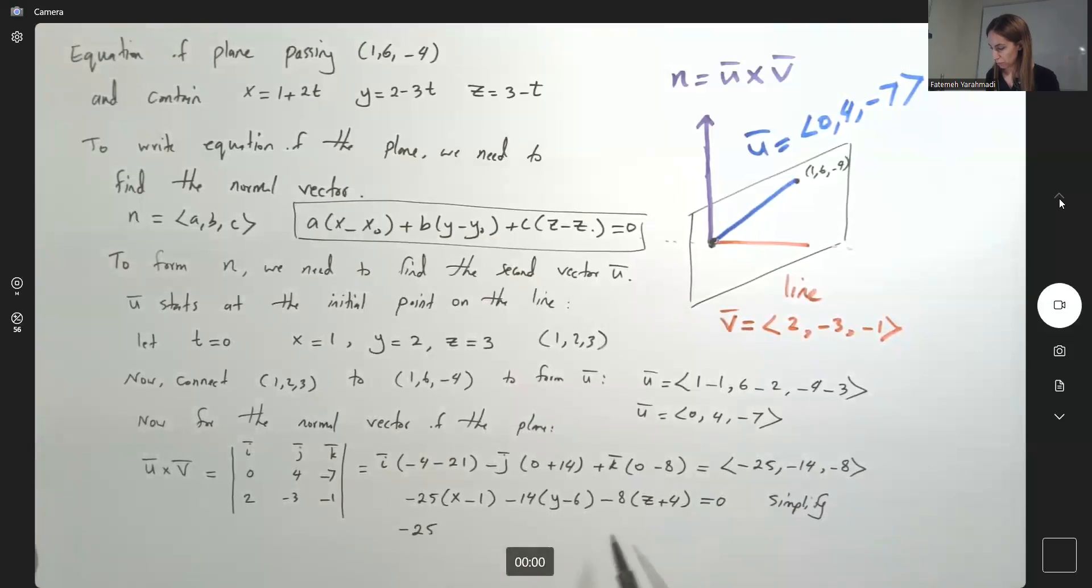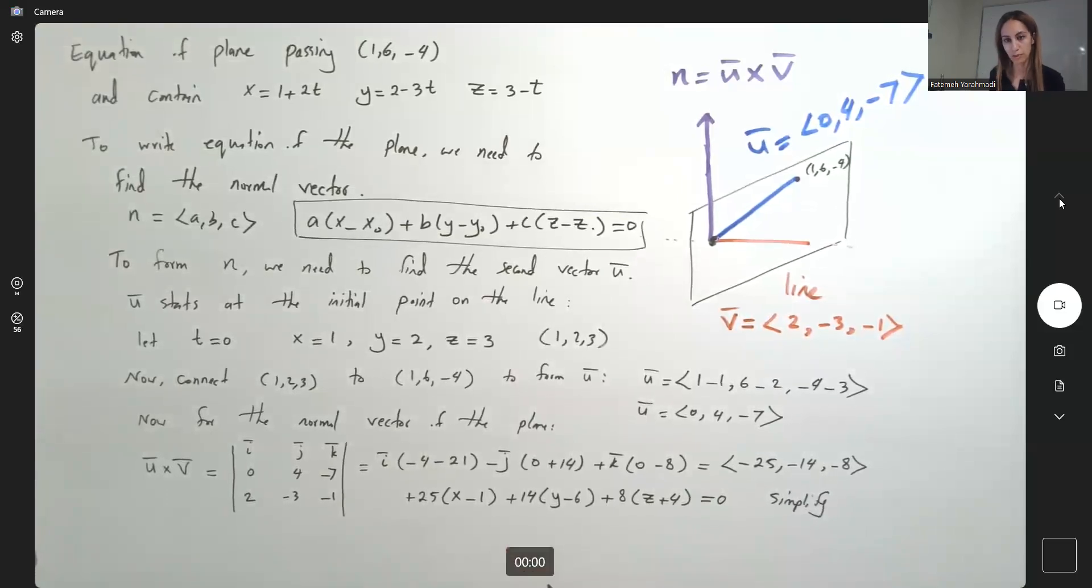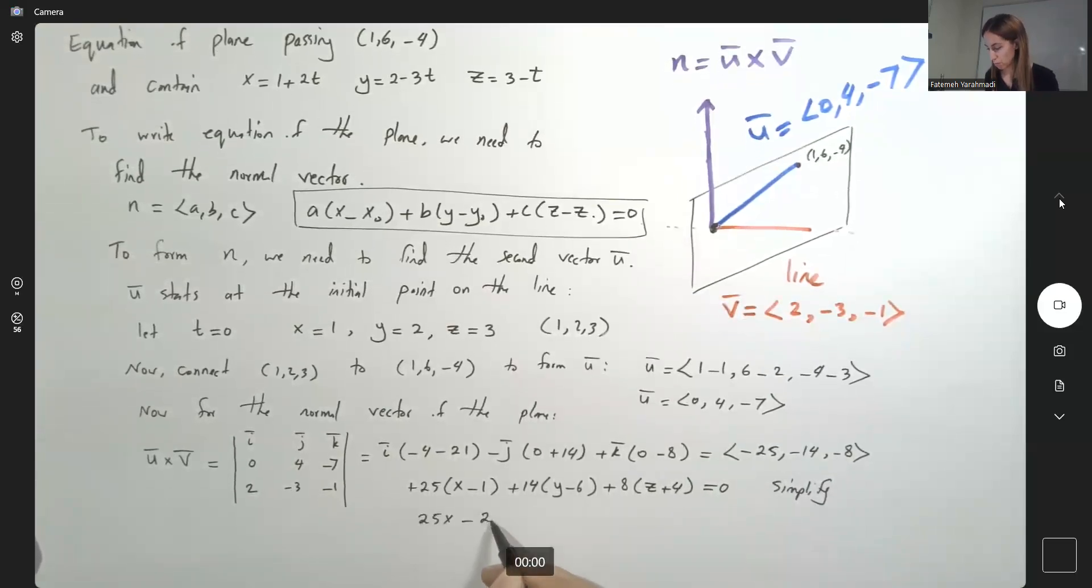So negative 25, we can multiply everything by negative and write it as positive 25, positive 14, positive 8. This becomes 25x minus 25 plus 14y minus 84 plus 8z plus 32 equal to 0. So here you have 25x plus 14y plus 8z, and combine these together. You get negative 52 and negative 77.